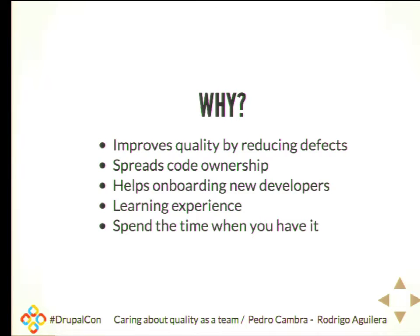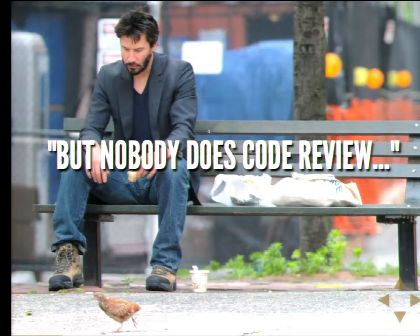Everyone does code review the way they like it and the way they are comfortable with. There's not enough code review being performed. It's a process that improves quality by reducing defects. Everyone is on the code, so it spreads code ownership. It helps new people on board because they get a new sense of the code, and it's a learning experience for everyone on the team. It helps you spend time when you have it because you solve problems before things break in production. Keanu Reeves is sad because nobody does code review.